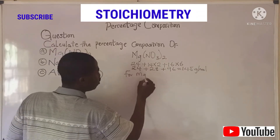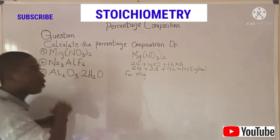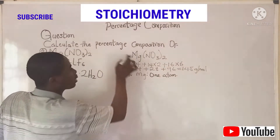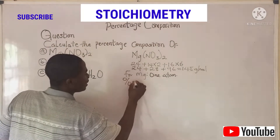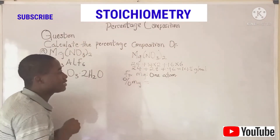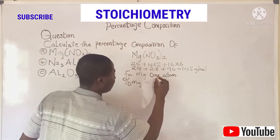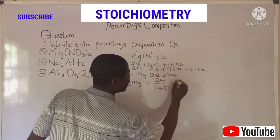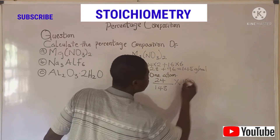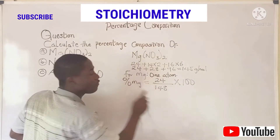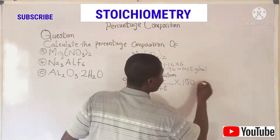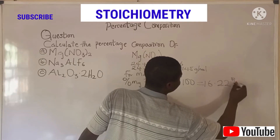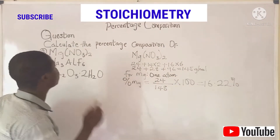For magnesium: how many atoms of magnesium are present in this compound? One atom. So to calculate the percent composition of magnesium, you simply take the atomic mass of magnesium, which is 24, divide by the formula weight of the compound, which is 148, times 100 — because we are looking for percentage. So 24 over 148 times 100 gives us the percentage of magnesium in the compound as 16.22%.